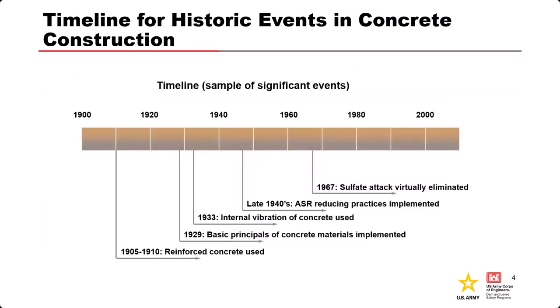The first thing we need to know when we look at our concrete to understand its vulnerabilities is just when it was placed, when it was constructed. Our concrete practices have changed and evolved over time — we've learned problems and solved them. So coming out of when the structure was built, there may be certain vulnerabilities, or those may have been eliminated. A few of the big things in the evolution of concrete: when we started using reinforcement, when we started consolidating concrete with vibration, and when certain chemical reactions were identified and solved, like alkali-silica reaction and sulfate attack.